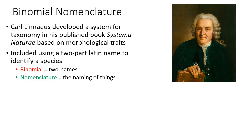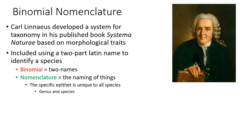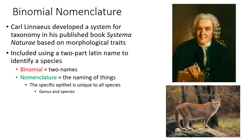Binomial means two names, and nomenclature is the system of naming — so this is called binomial nomenclature. The specific epithet includes both the genus and the species name: the genus is capitalized and the species is lowercase, and it is either underlined or italicized.